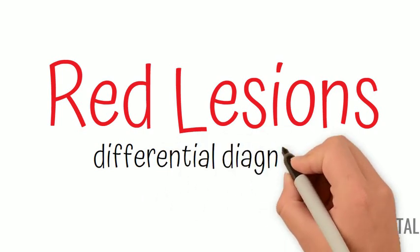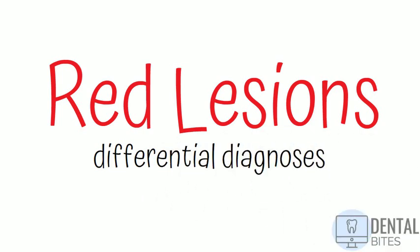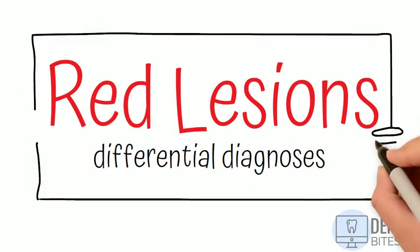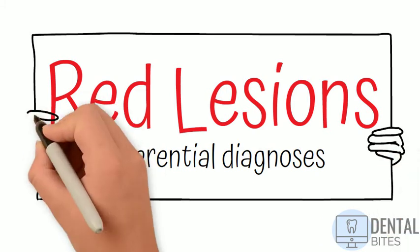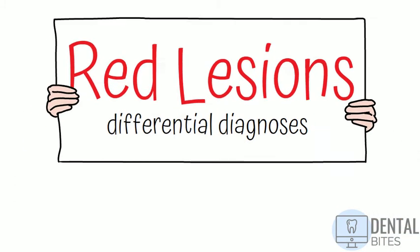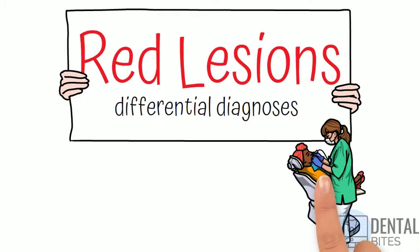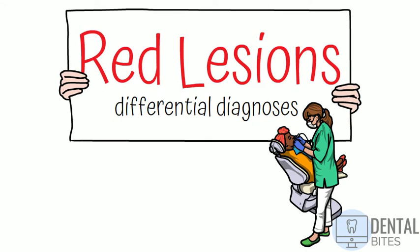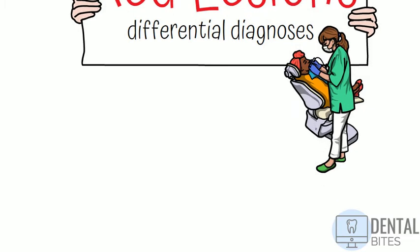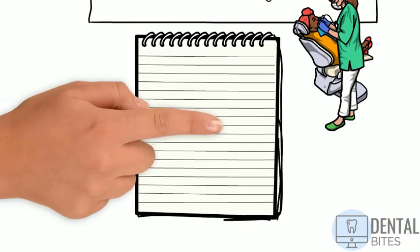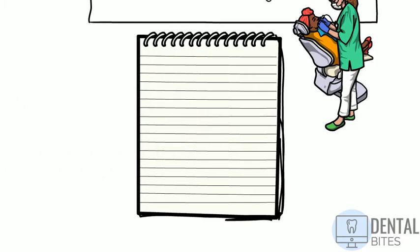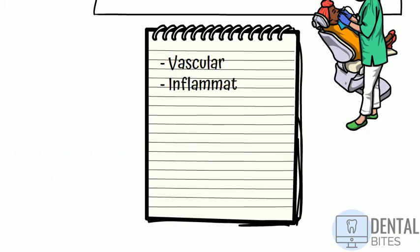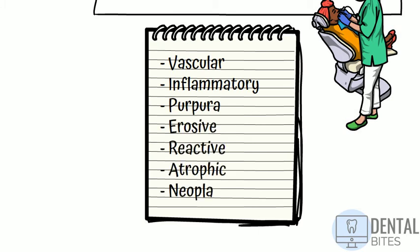Hi guys, welcome to my channel. In today's video we're going to be talking about the differential diagnosis for red lesions that may present to you as the dentist in the dental chair. It's going to be a quick revision overview, so look out for more detailed videos on some of these conditions on the channel. We're going to categorise the different types of red lesions that can be seen in the mouth by their main causes and talk through each of these groups one by one.